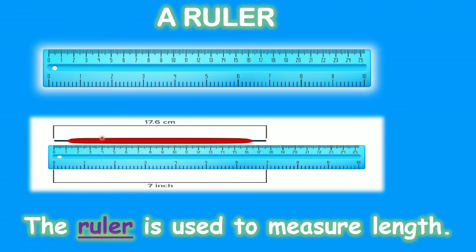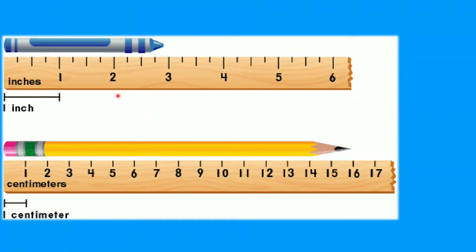In this particular case our ruler has inches and centimeters. We can see this object is 17.6 centimeters. Let's look at this example: this is a ruler that has been marked in inches, and it's measuring the length of the crayon. This ruler is measuring the length of this crayon in inches.